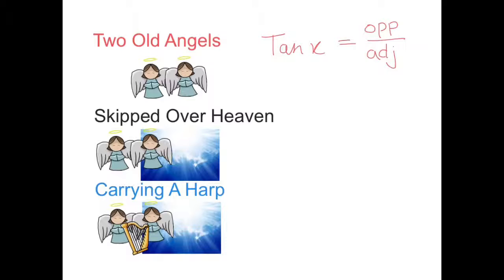Skipped over heaven, the next ratio is what we call the sine ratio. So the sine of angle x. And that's the opposite divided by the hypotenuse.